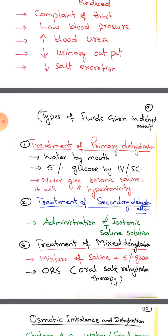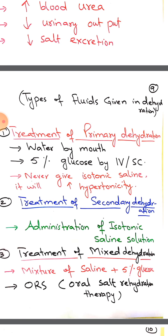Types of fluid given in dehydration: first, we replenish dehydrated fluid by oral rehydration water by mouth. Clinical treatment is given by 5% glucose in injectable form or subcutaneous. We can never give isotonic saline to treat primary dehydration, as it will increase hypertonicity — the body is deficient of pure water, not salt.